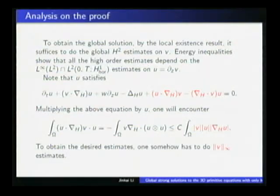Some analysis on the proof. Local existence and uniqueness can be proved in a standard way. Local existence tells us that if the initial data belongs to H2, then we have local strong solution. So to obtain the global solution, it suffices to do the global in-time H2 estimate. Our energy inequality shows that all high-order estimates depend on the estimate of this quantity U, which is the z derivative of V. So let's try to do the estimate of this U. U satisfies this equation with two bad terms of stretching type, these two terms. Then we multiply this equation by U. We will encounter this term. Integrate by parts, we arrive here.